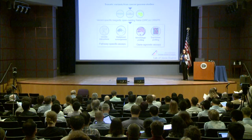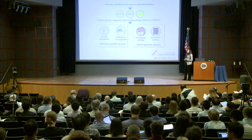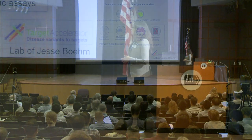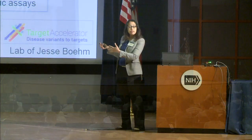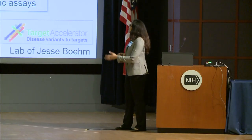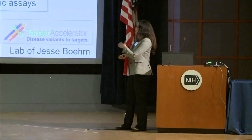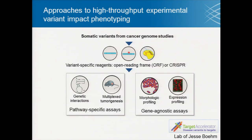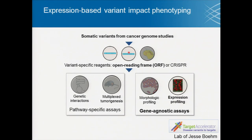With Jesse Boehm's lab, we've been thinking about how to experimentally, in a high-throughput way, functionally test the function of these many mutations. Given all these somatic variants we're identifying from cancer genome studies, we can create specific reagents to test their function and then put these reagents through a host of assays, some being very pathway specific. But we're also interested in gene-agnostic assays — so if you have no idea what the function of a gene is or what pathway it's involved in, these assays would give a broader picture of the function of these mutations.